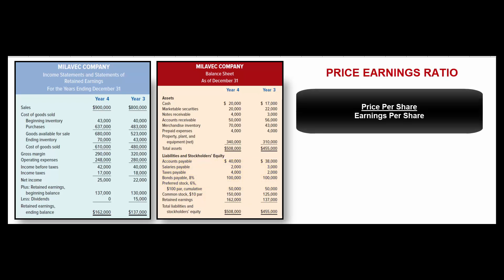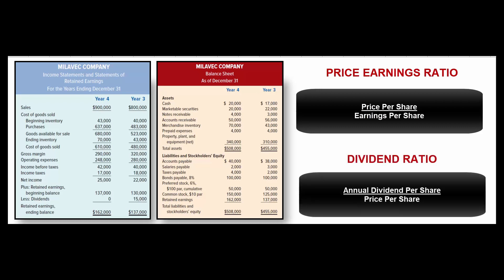Two final ratios: the price-to-earnings (P/E) ratio is market price per share over earnings per share. Dividend yield measures the return from dividends alone — annual dividends per share divided by the market price per share — showing what yield you receive when investing in that stock based exclusively on dividends.